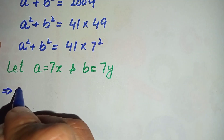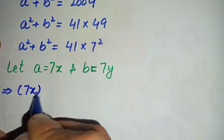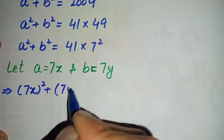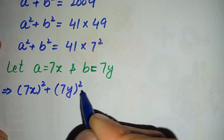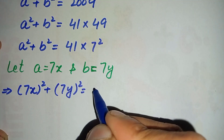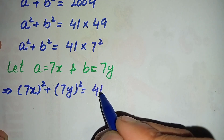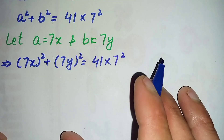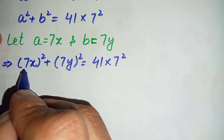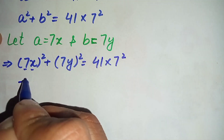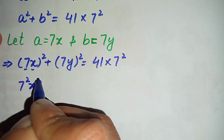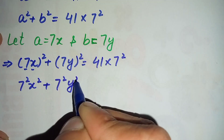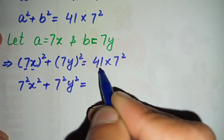Substituting, the equation becomes: (7x) whole squared plus (7y) whole squared is equal to 41 times 7 squared. Applying the square to both the number and the variable, it becomes 7 squared times x squared plus 7 squared times y squared is equal to 41 times 7 squared.